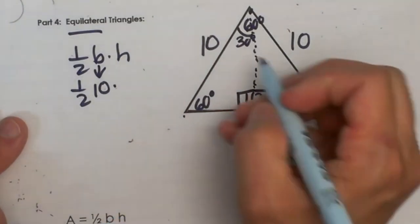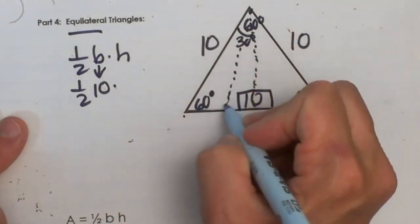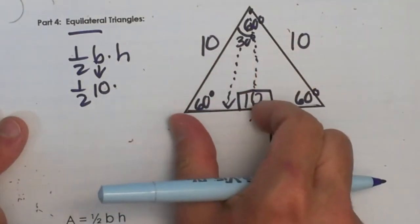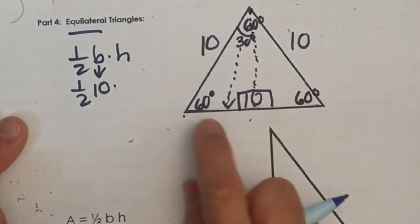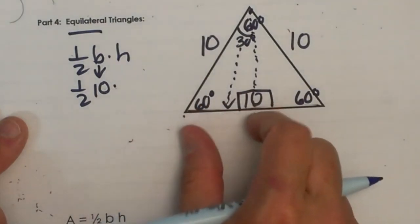We need to know which side. Well this is my short leg over here and this is my long leg, so the height is my long leg. I need to know the short leg first.